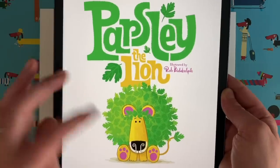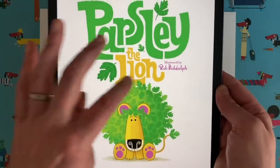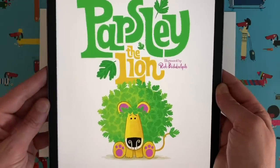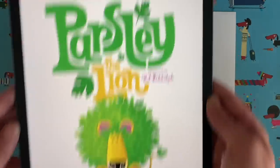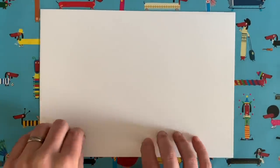So this here is Parsley. Could you see? He's a little lion and his mane is made out of parsley leaves. I hope you like him. I'm super excited about this. I can't wait to get this book finished and get it out so that you can all read it. Anyway, I thought that today I would show you how to draw Parsley the Lion. Do you think that's a good idea?